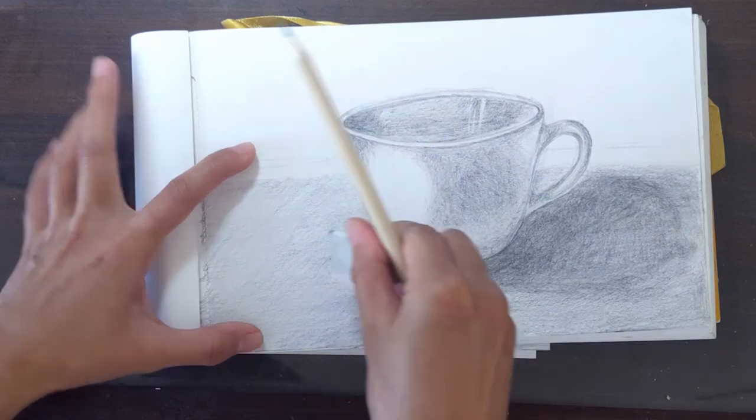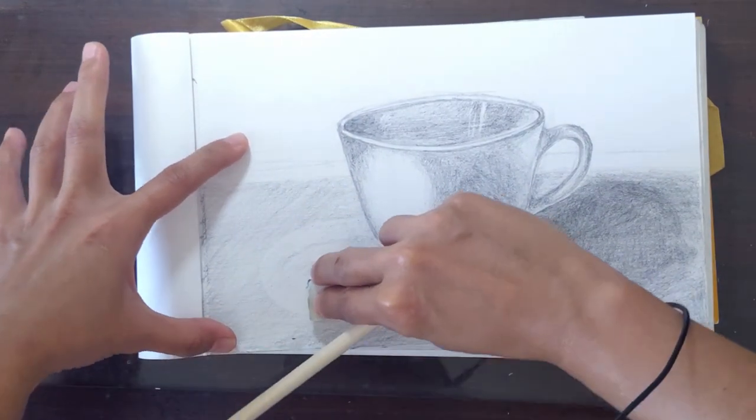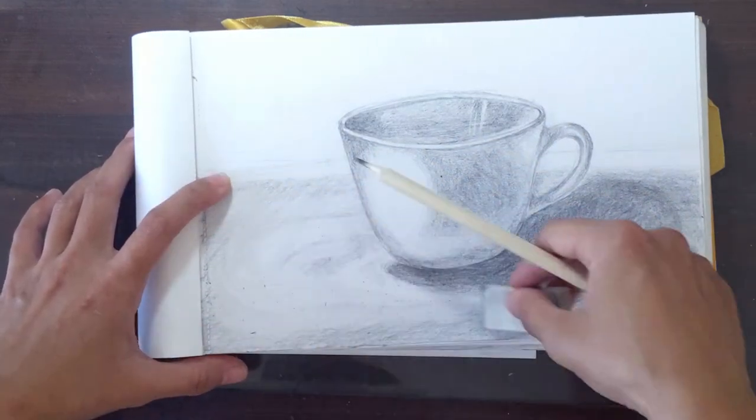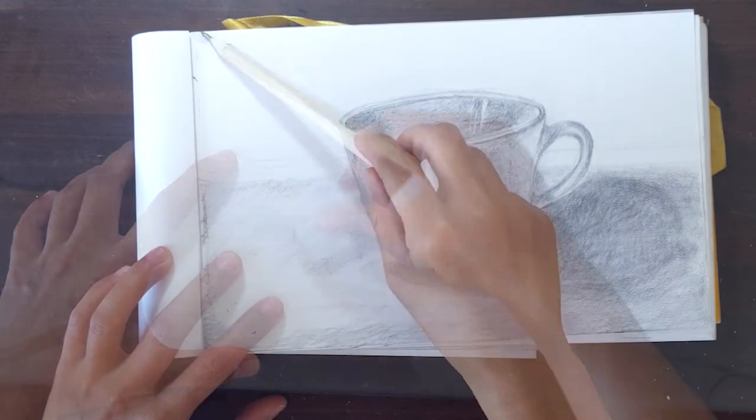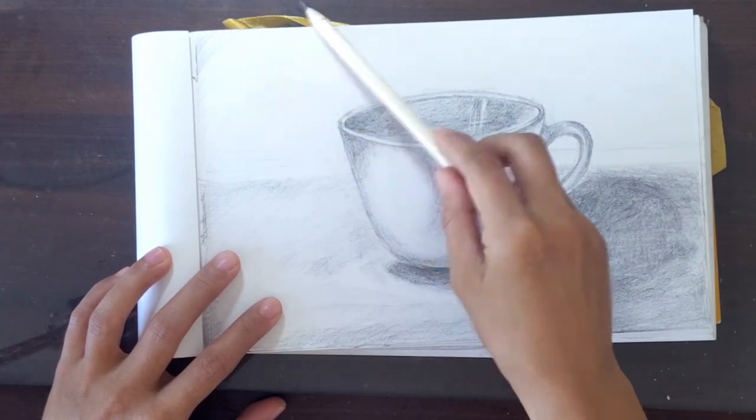You can always use your eraser to edit your shading. Now, do the same to the background until you are done with your still life image.